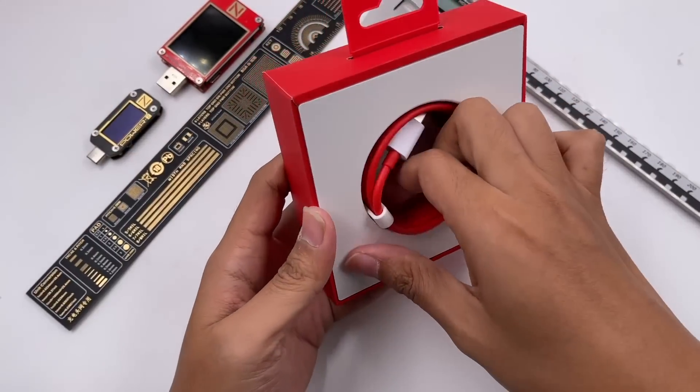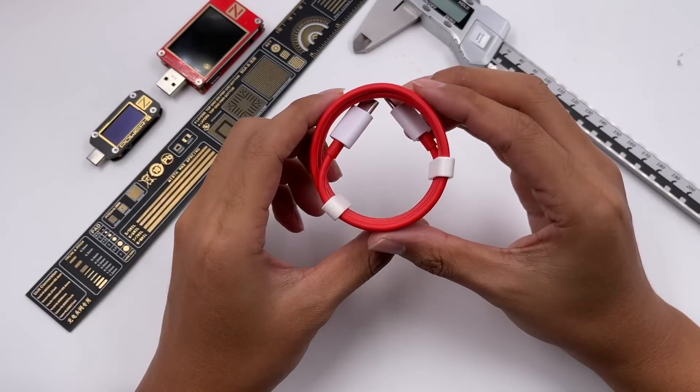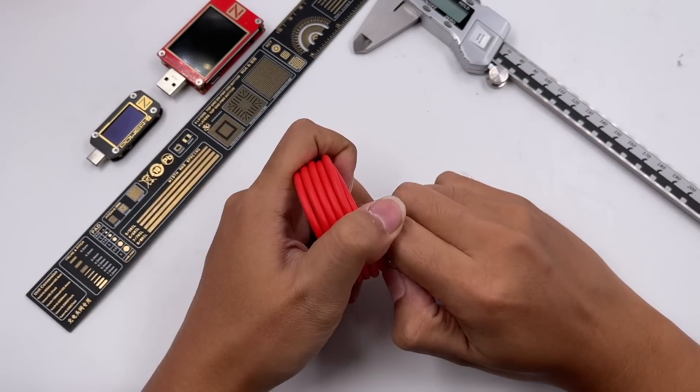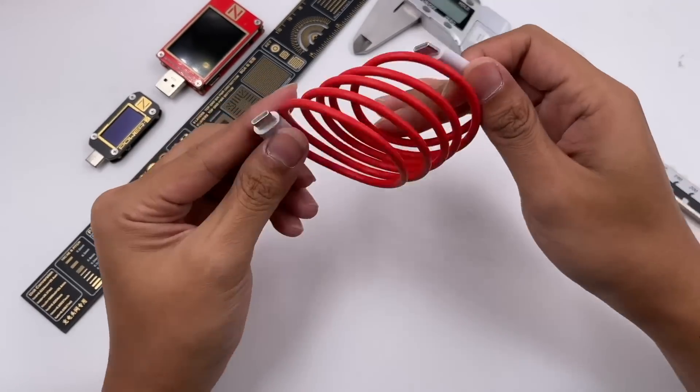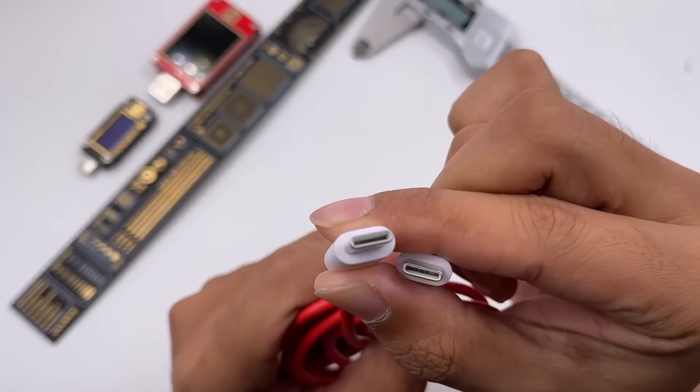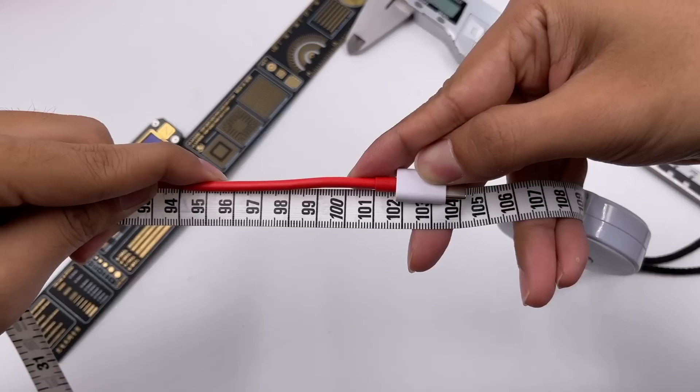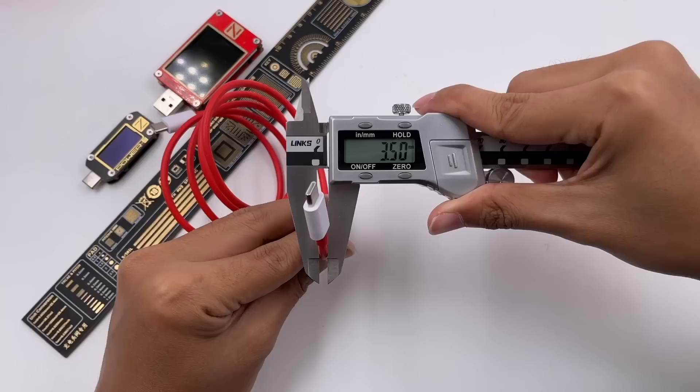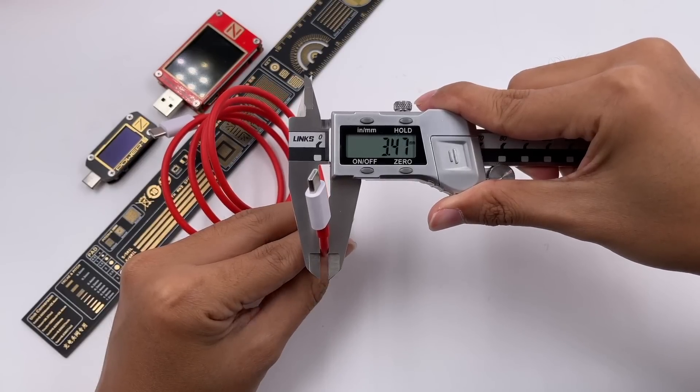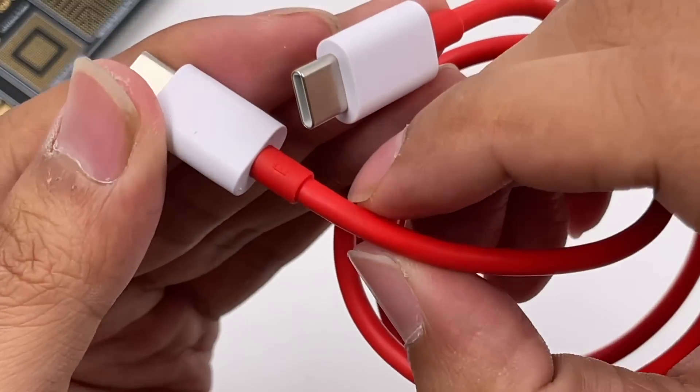Open the box. The cable is fixed inside and is the same one that comes with the phone. Dual USB-C ports. The length is about 1m and the diameter is about 3.5mm. The quality is pretty good.